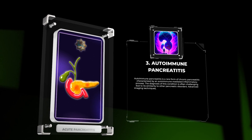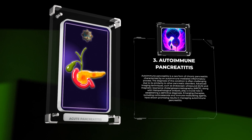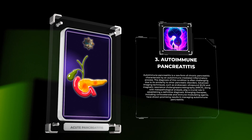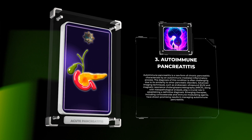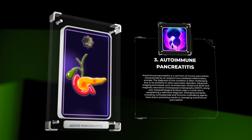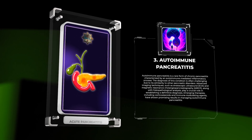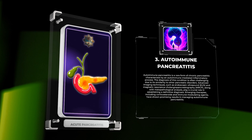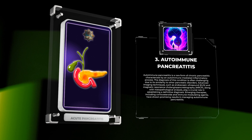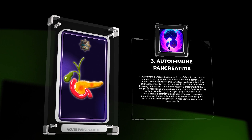Autoimmune pancreatitis is a rare form of chronic pancreatitis characterized by an autoimmune-mediated inflammatory process. Diagnosis is often challenging due to its similarity to other pancreatic disorders. Advanced imaging techniques such as endoscopic ultrasound (EUS) and magnetic resonance cholangiopancreatography (MRCP), along with histopathological analysis, play a crucial role in establishing a definitive diagnosis. Emerging therapies including corticosteroids and immune-modulating agents have shown promising results in managing autoimmune pancreatitis.